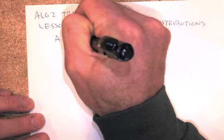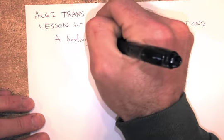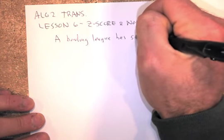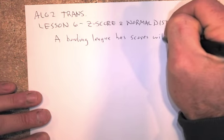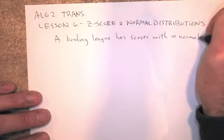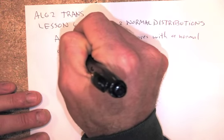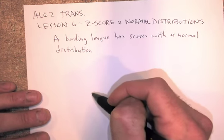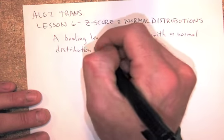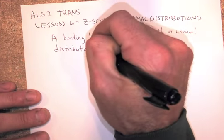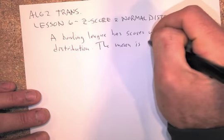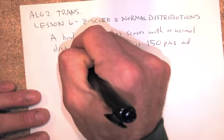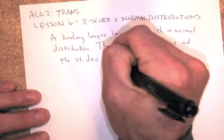Bowling League. Kind of obsessed with bowling, I think. I think all my examples are bowling. It has scores with a normal distribution, okay? That means they make a bell-shaped curve like we did on the other lesson. They're going to make this nice bell-shaped curve if we graphed out everybody's bowling scores on like a bar graph. Normal distribution, the mean is 150 pins, and the standard deviation is 8 pins.